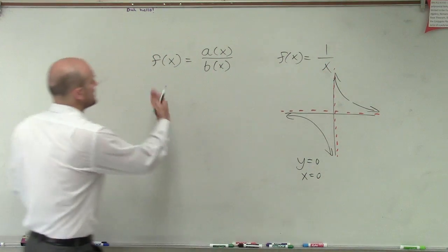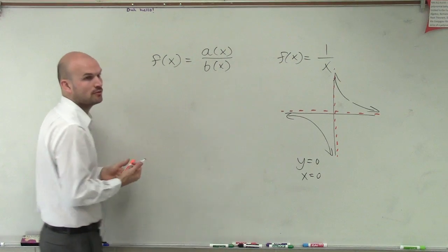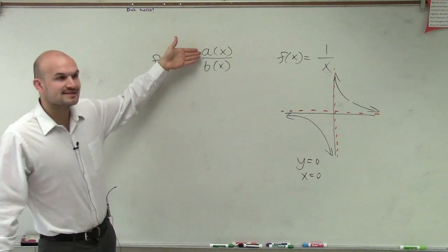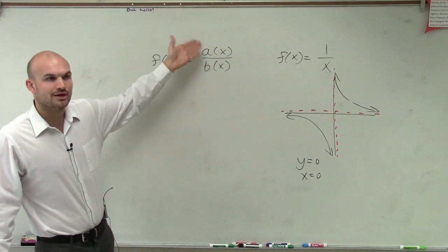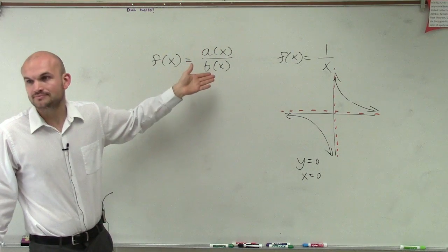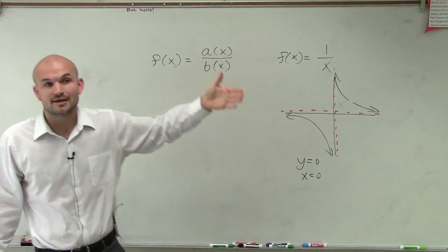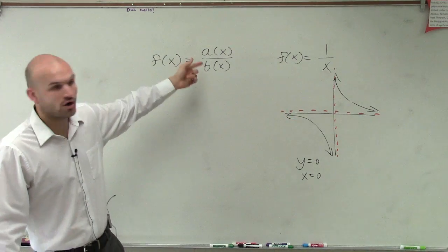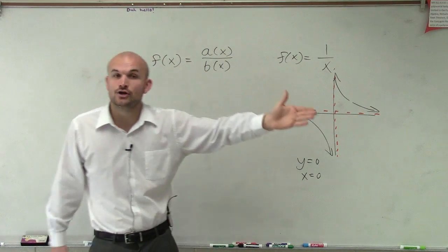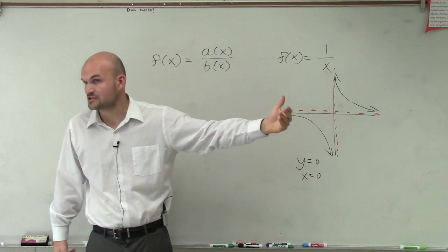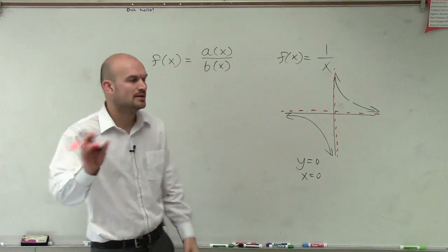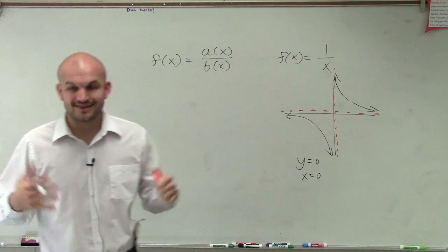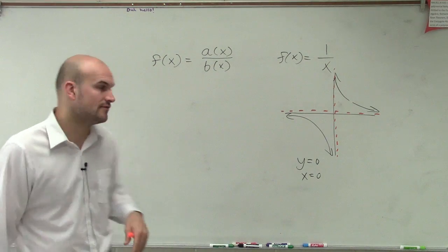So when we look at what we call a rational function, a rational function simply is a polynomial over another polynomial. Now polynomials, ladies and gentlemen, can be constant polynomials — this could be 4 over x squared. It could be binomials or it could be dealing with trinomials as well. It just means a polynomial. But now what we're going to do is talk about the asymptotes of our function.